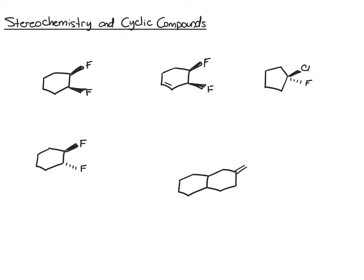Let's start with the first example on the top left. If it helps, you can certainly draw in your hydrogens at these 3D centers. To determine whether or not these are chiral centers, look to see if there are four different groups around the carbon. For this first one on top: one group is the fluorine, a second is the hydrogen, third is a CH2, and the fourth is a CH with the fluorine attached — so there are four different groups, and we'll mark that as a chiral center.